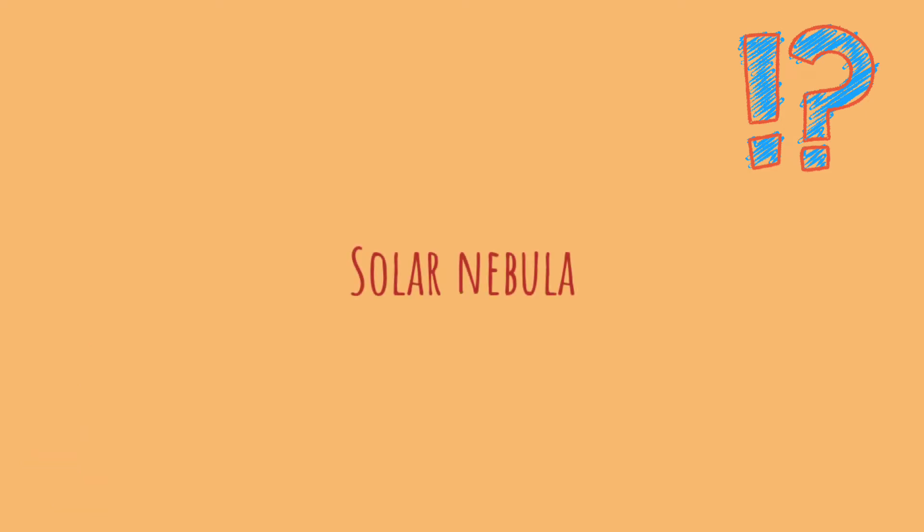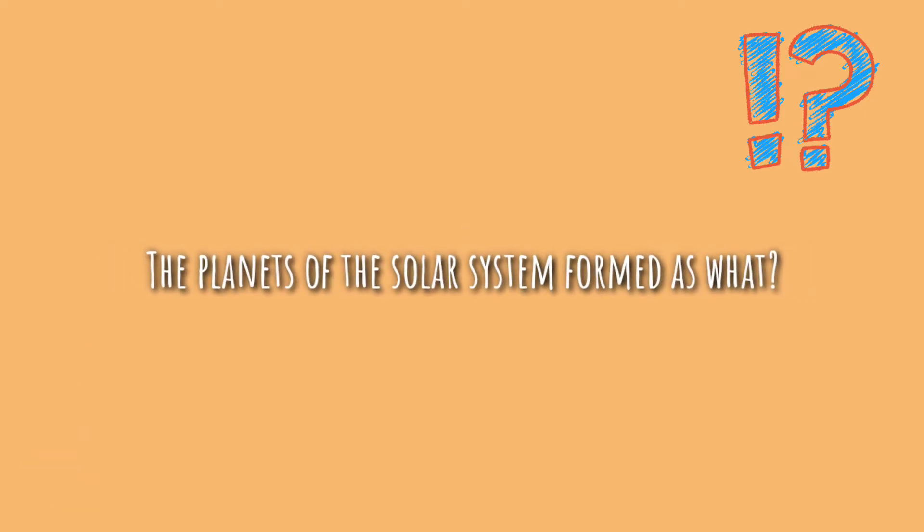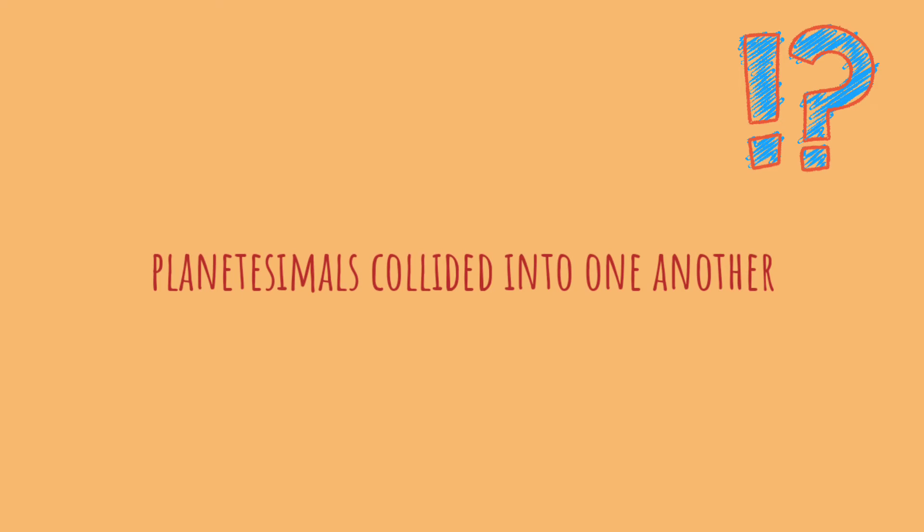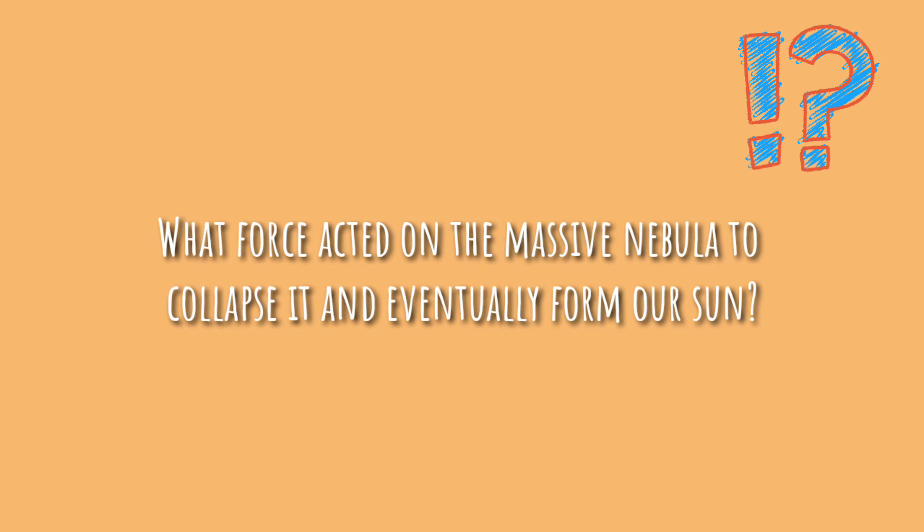Four: The planets of the solar system formed as what? Planetesimals collided into one another. Five: What force acted on the massive nebula to collapse it and eventually form our sun? Gravity.